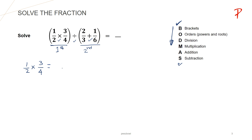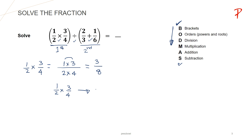Multiplication of fractions is very simple — we multiply both the numerators and keep it at the numerator place, and multiply both denominators. 1 multiplied by 3 is 3, and 2 multiplied by 4 is 8. So 1 upon 2 multiplied by 3 upon 4 equals 3 upon 8. Let us put it in a bracket as in the example.